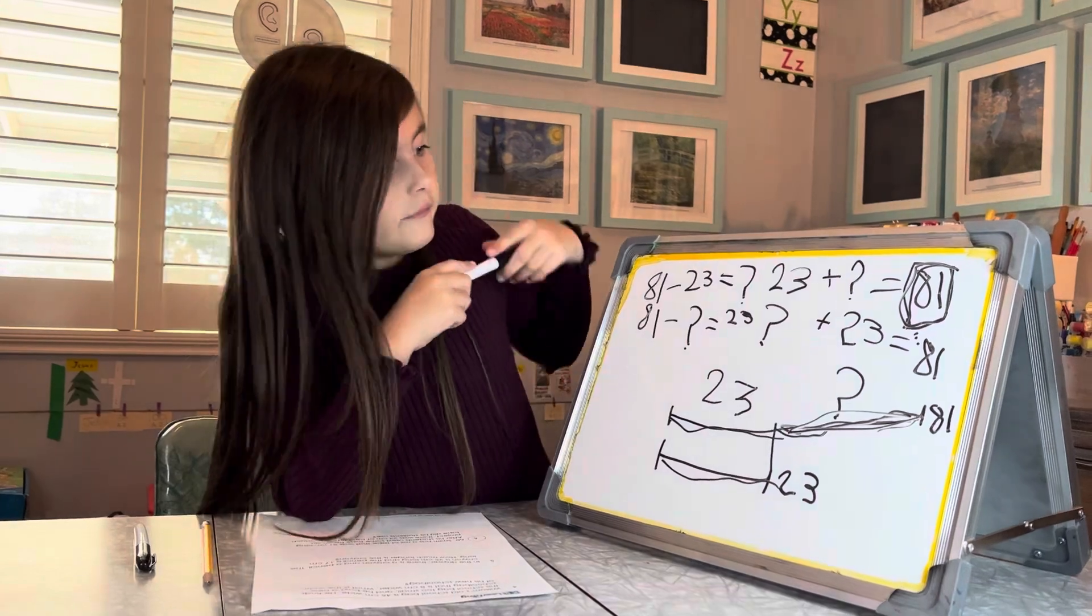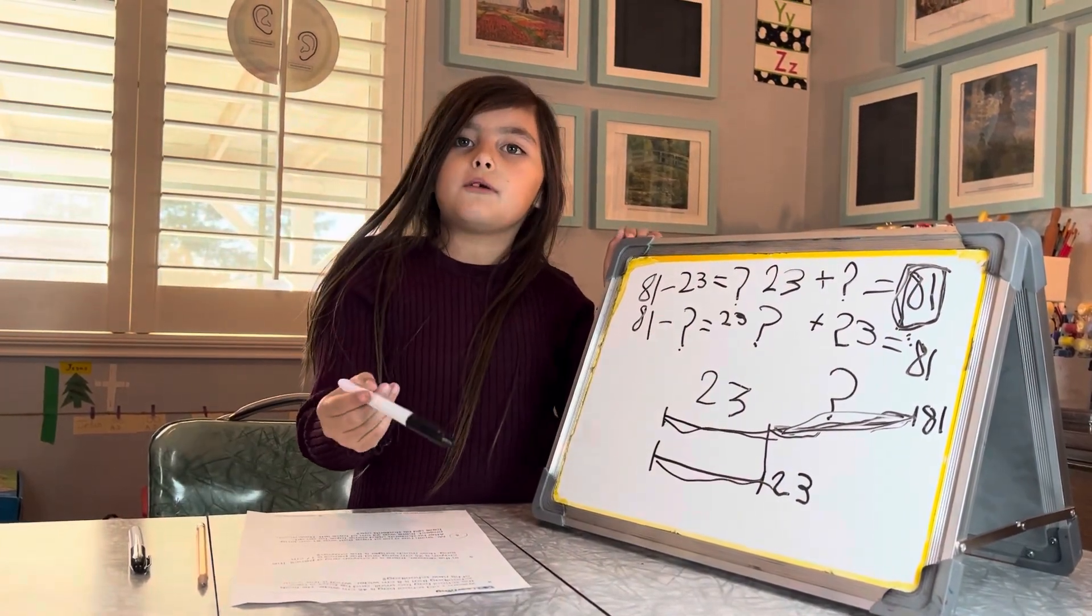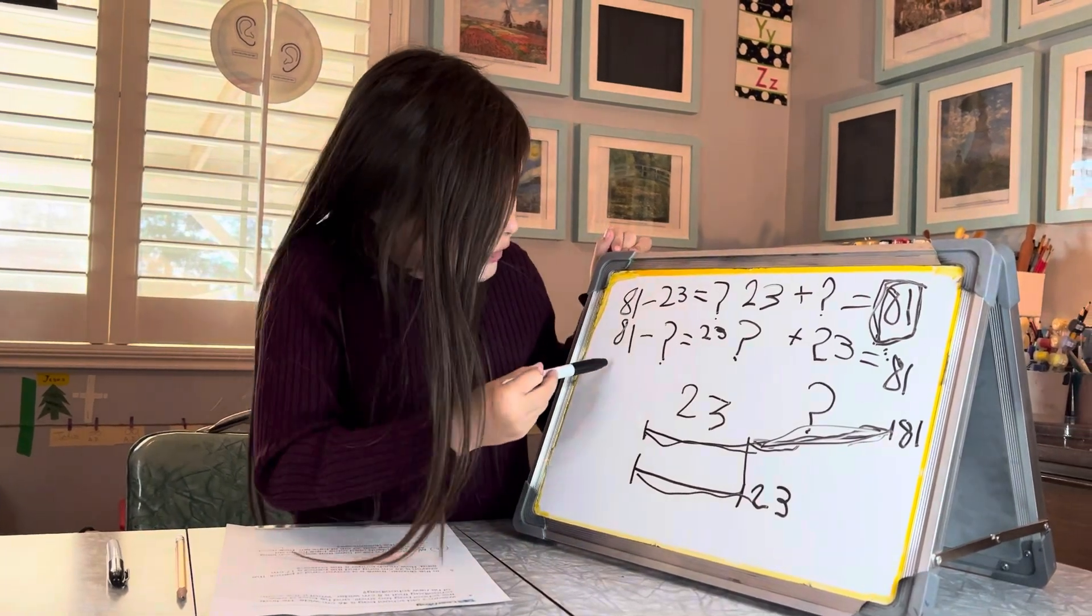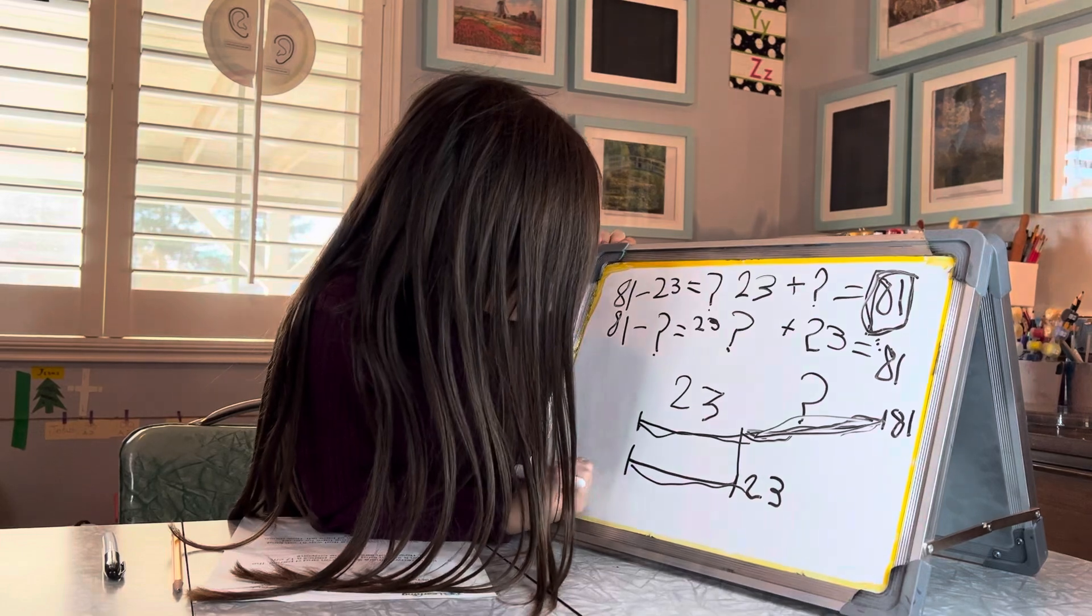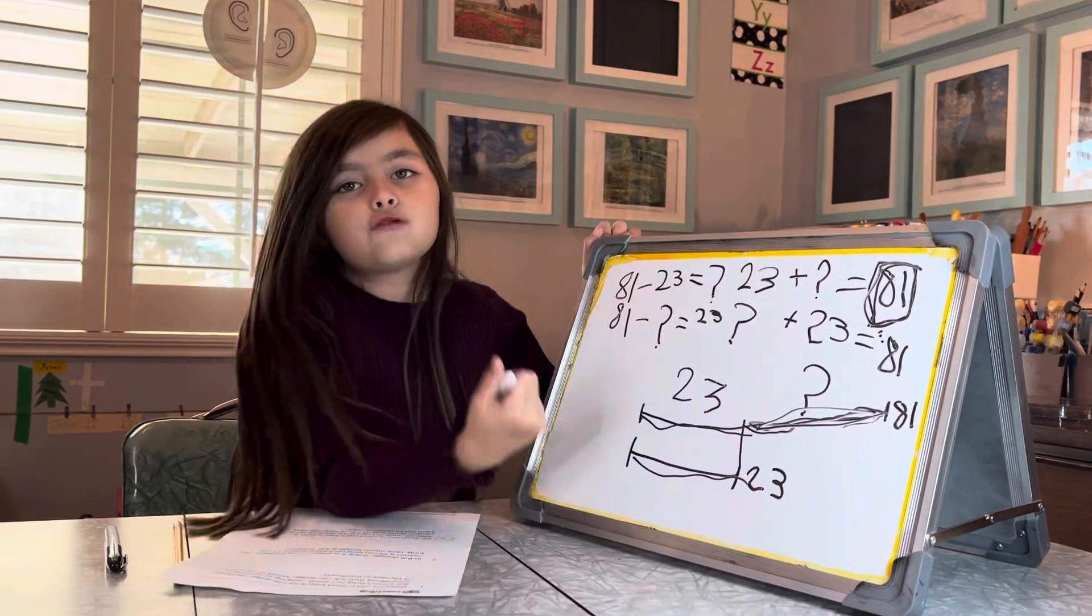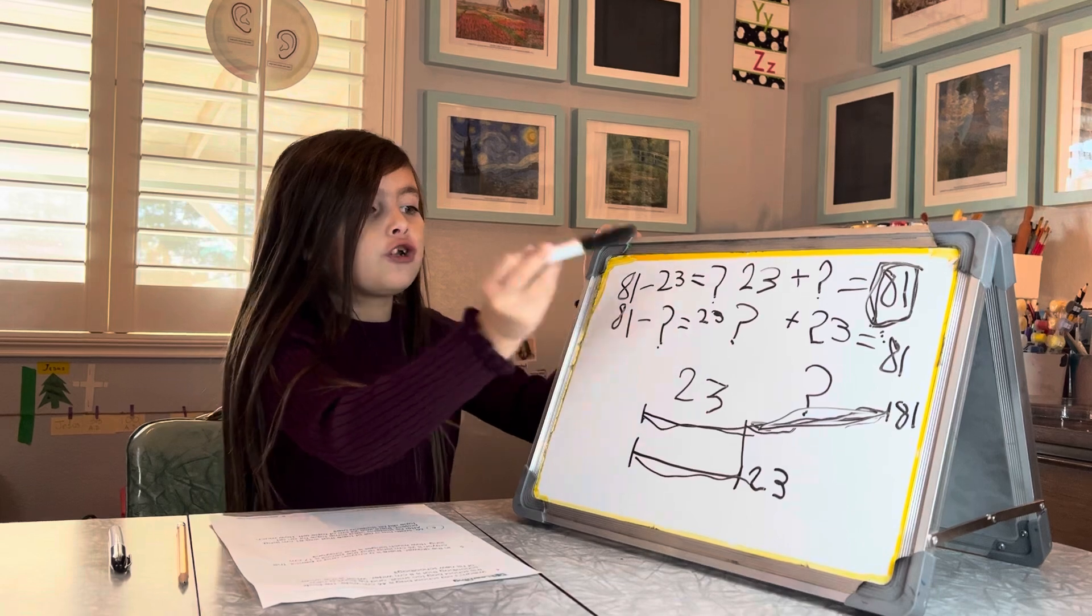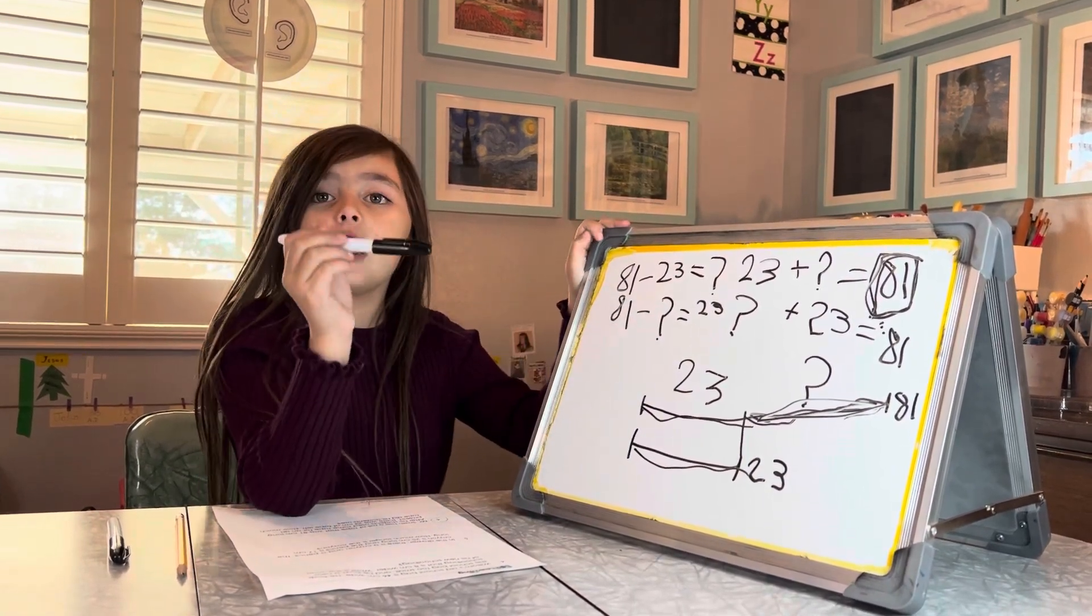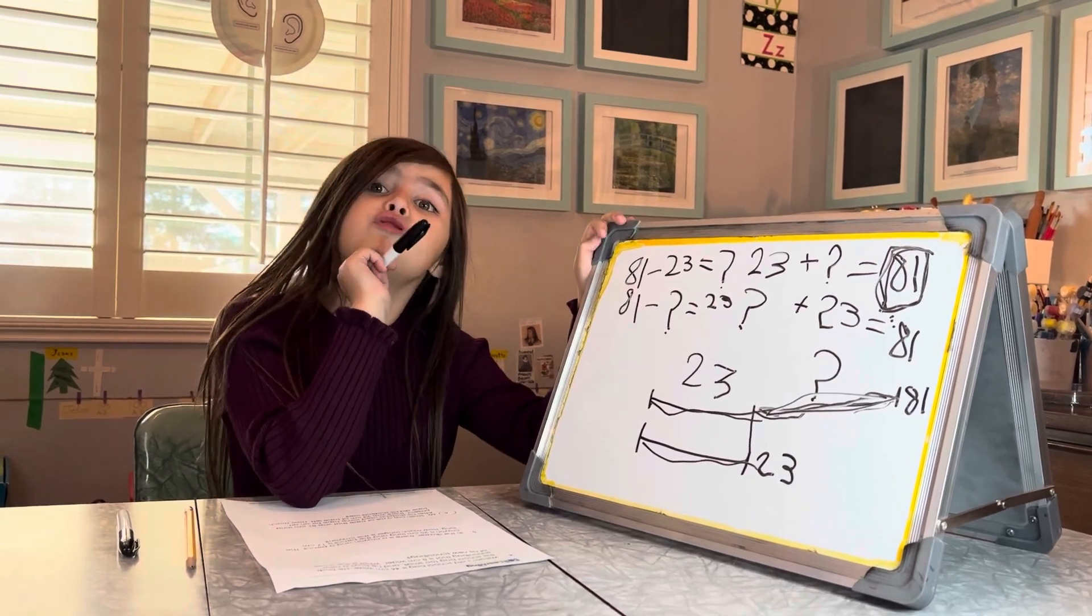And I thought that maybe one of the takeaway problems can be the answer. Let's look at the bottom one first. 81 takeaway something equals 23. Well, that is a problem. And we could figure out that problem somehow, but I'm afraid it might be too hard.